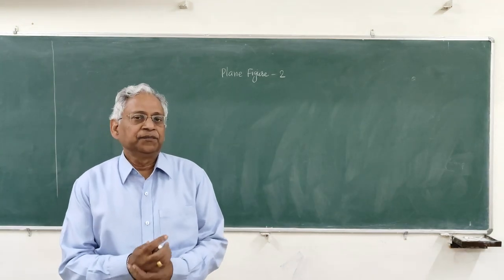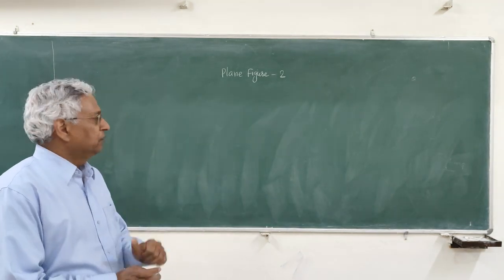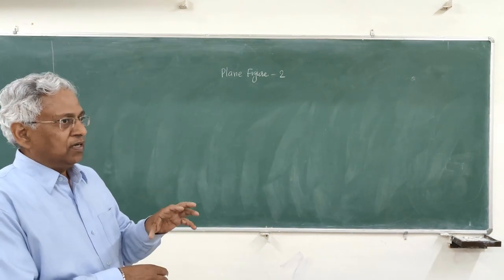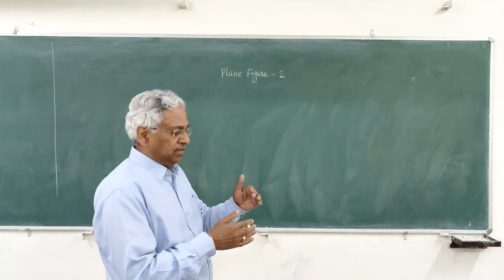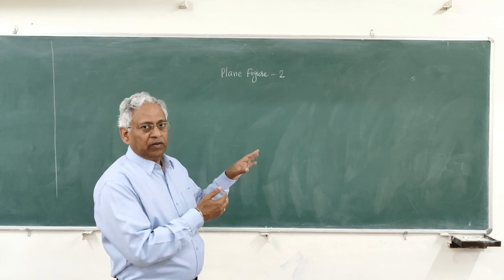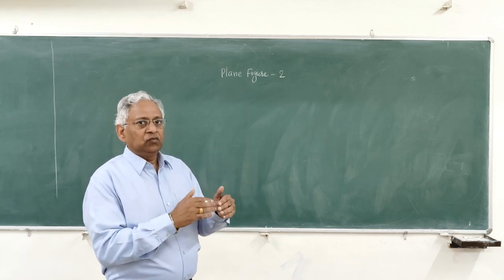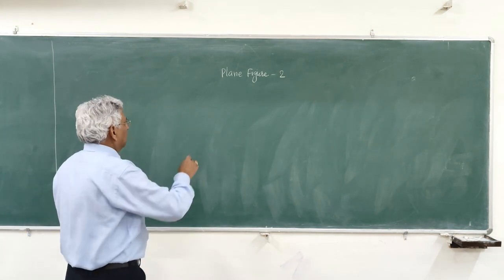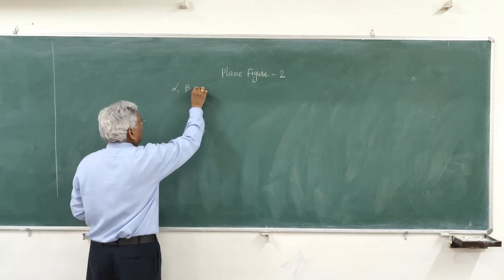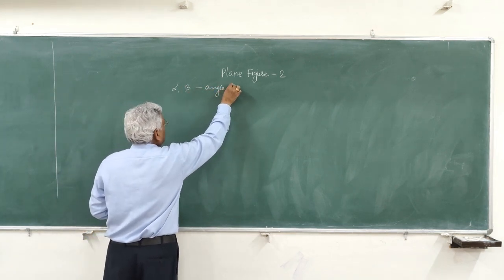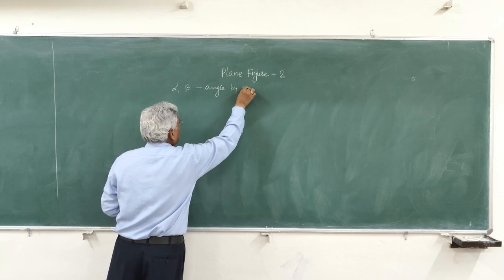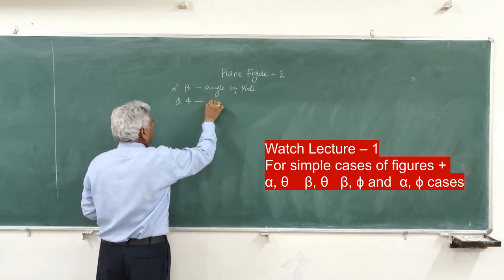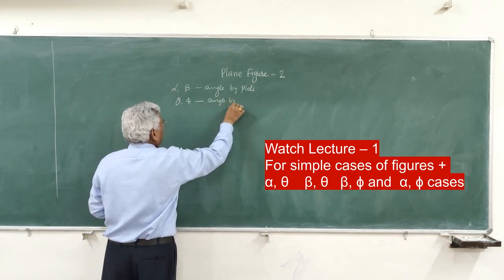Hello friends, welcome again. In this session, we will take the second part of our lecture on plane figures. In the first part, I told you about very simple cases when a plane figure is either parallel to HP or VP, and one edge is inclined to either HP or VP. We have given alpha and beta as the angle made by the plate with the reference plane, and theta and phi are the angles made by the edge of the plate.